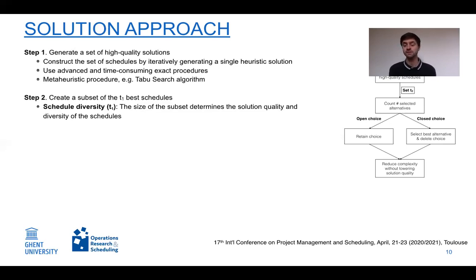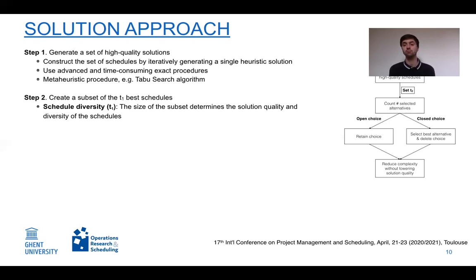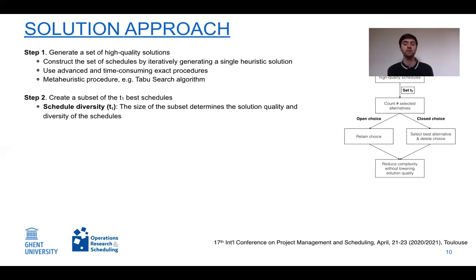In the second step, we retain only a small subset of the best schedules from the initial set. This introduces our first key criterion: schedule diversity, or T1, which is the size of this subset of best schedules. As we include more schedules, diversity between them increases, but overall solution quality in the subset decreases, as each additional schedule has slightly lower quality than those already present.